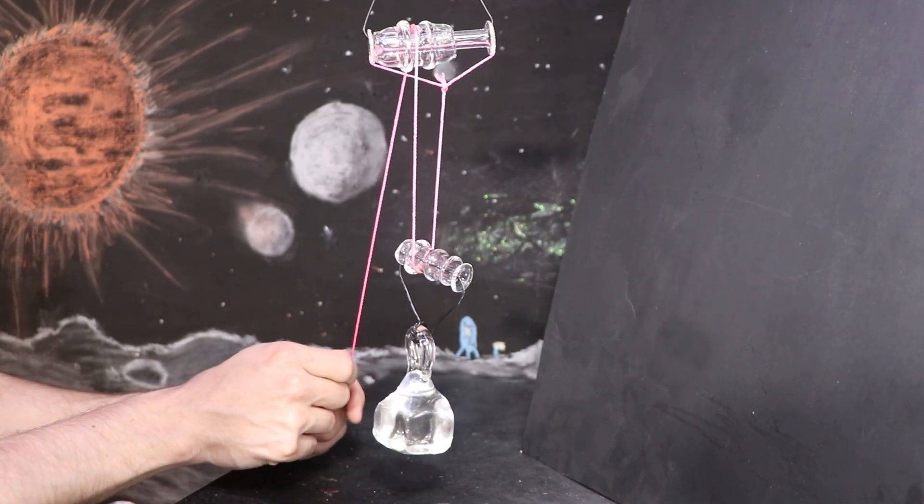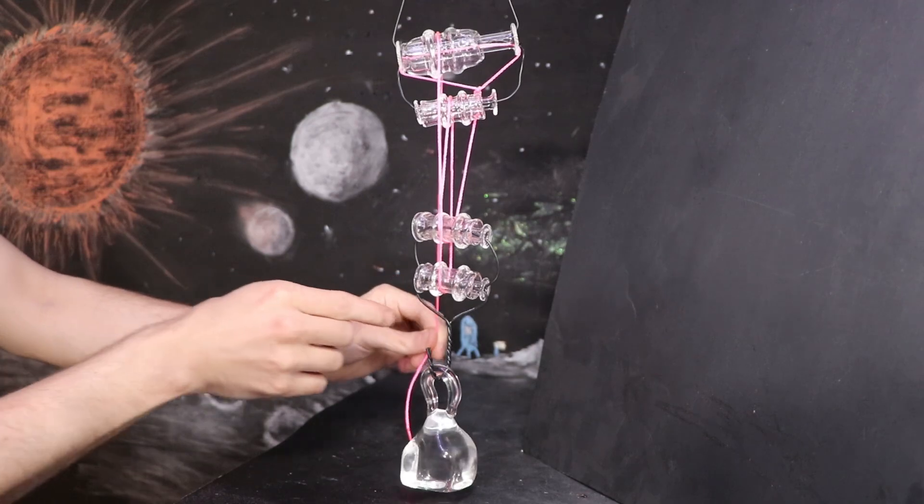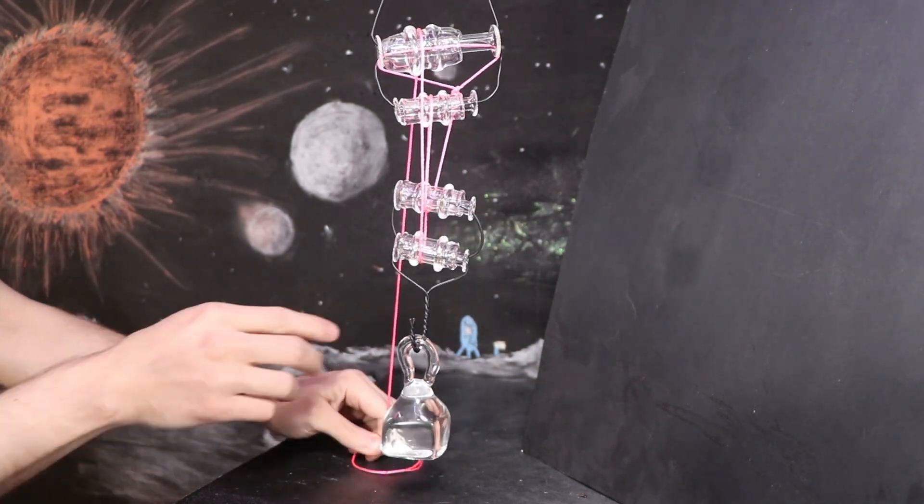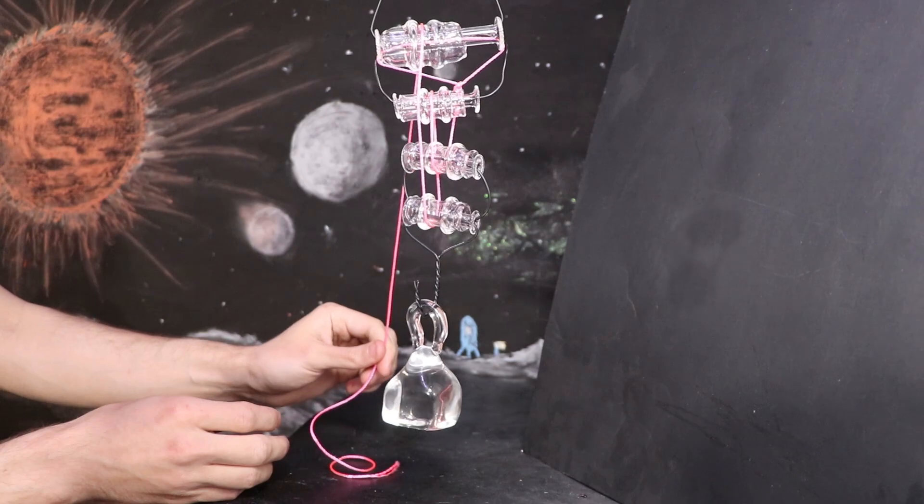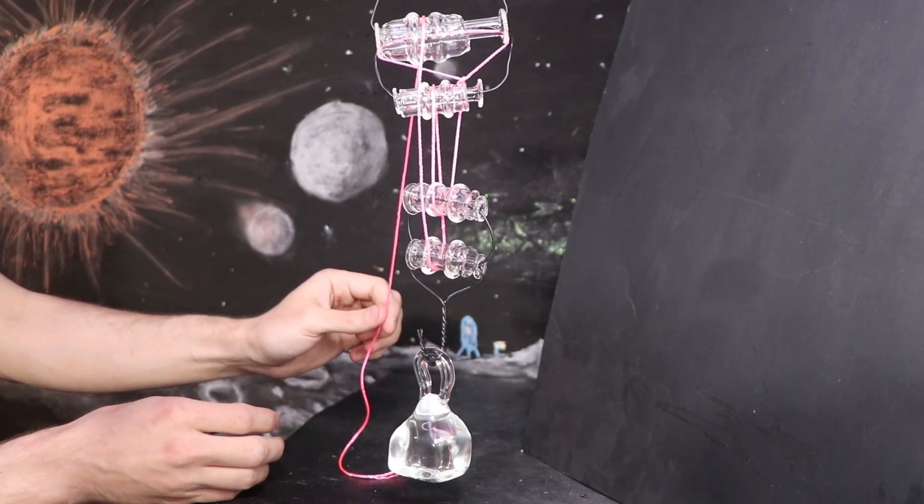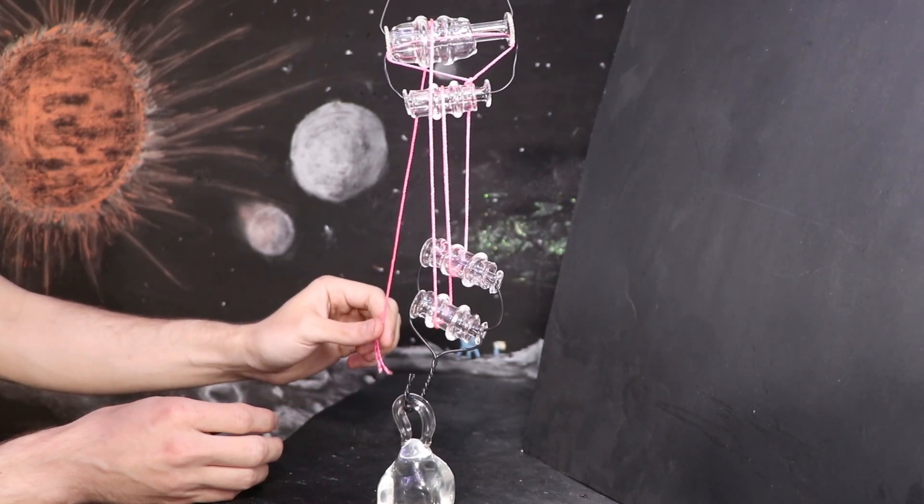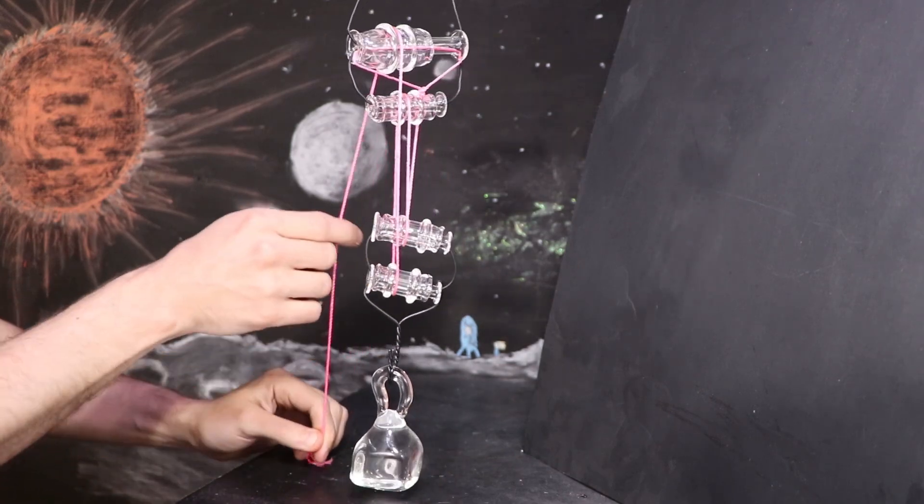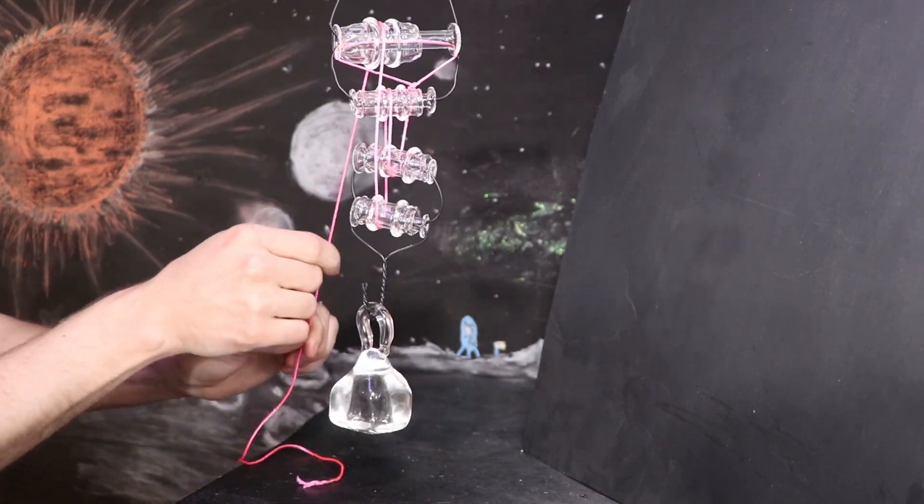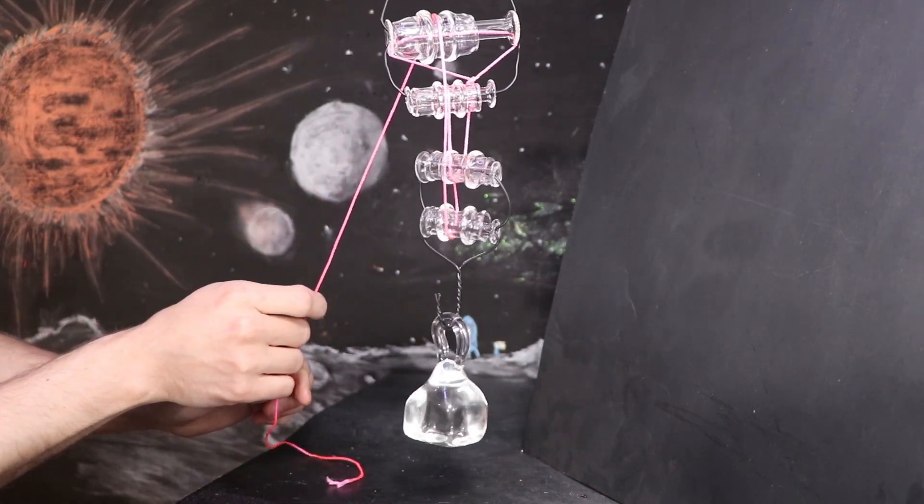As we add more ropes, we begin to divide the weight of the object between them. But then another interesting thing to know is that not only are we moving the rope, but we're moving the pulleys themselves. We're closing the gap between them.